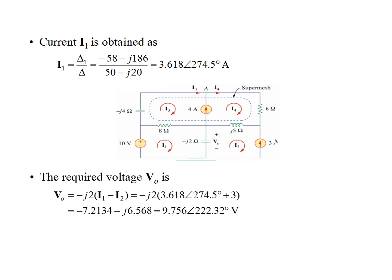Since we need to find V0, the voltage across the minus j2 impedance, we write: V0 = minus j2 * (I1 - I2). Substituting the values of I1 and I2, we find V0 to be 9.75 angle 222.32 degrees volts.